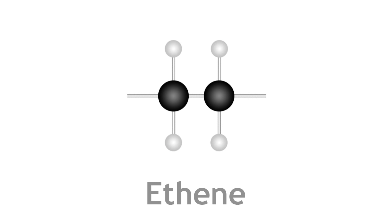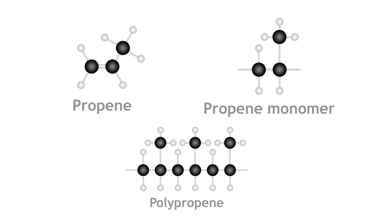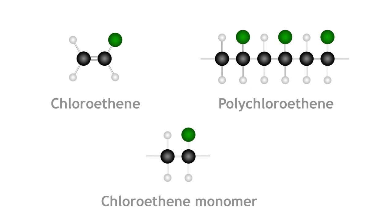As you can imagine, using different monomers creates different polymers with different repeat units along the chain and therefore different properties. We also have videos explaining the polymerization of propene and chloroethene.